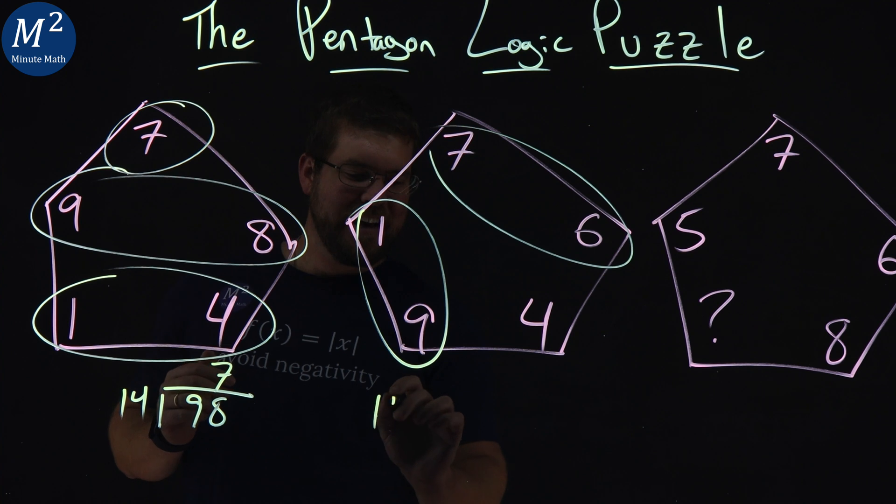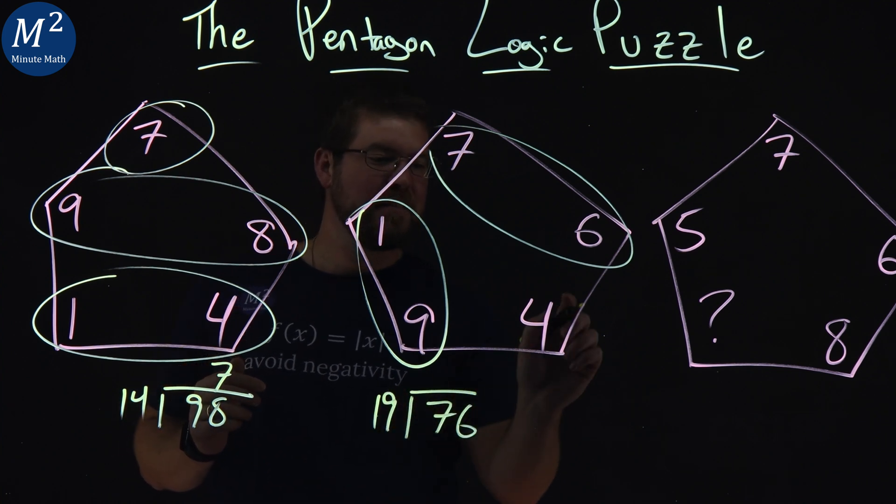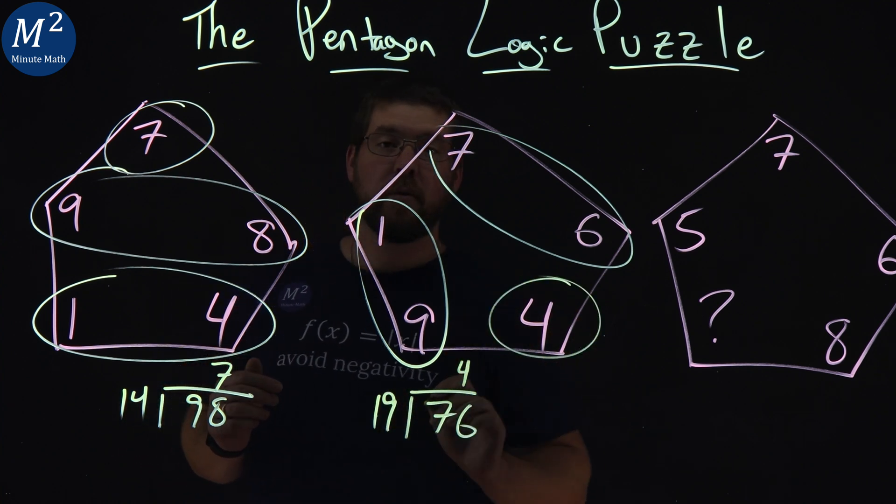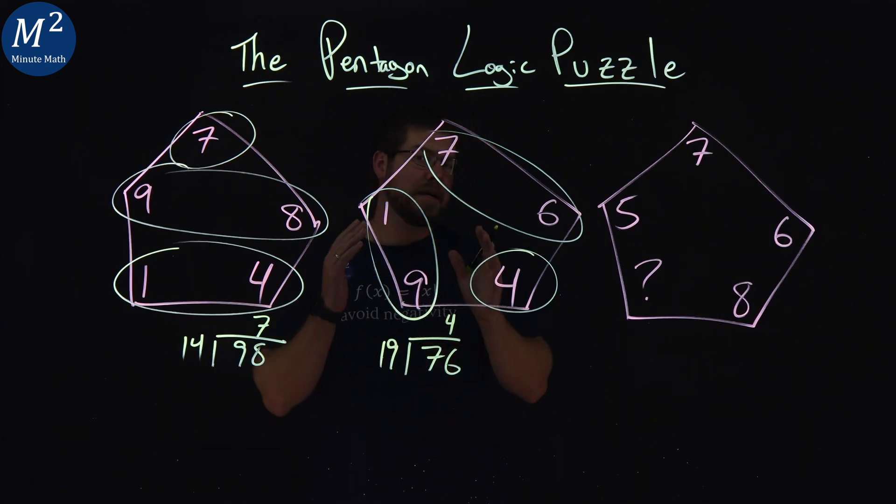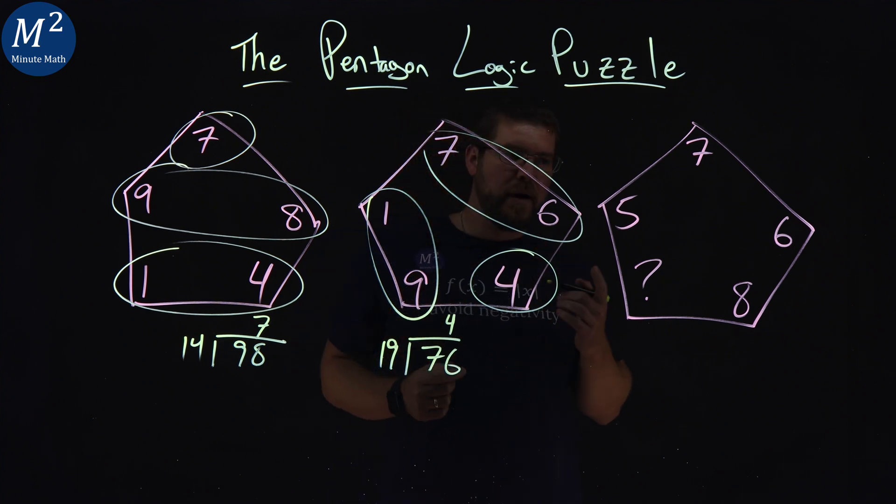19 goes into 76 four times. So, we're clearly seeing if we have two pairs of numbers, we're dividing into them, we get one by itself.